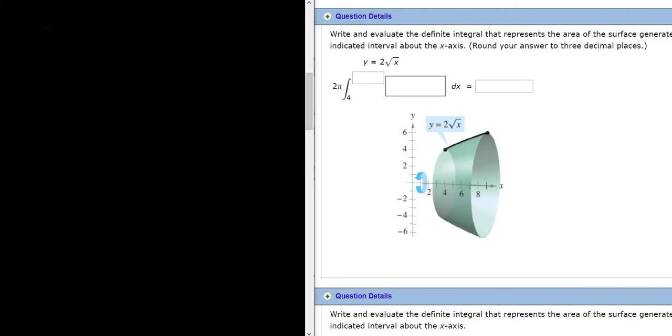So the formula to find the area of the surface of revolution is s equals 2 pi times the definite integral from a to b of r of x times the square root of 1 plus the derivative of f squared, and then dx.